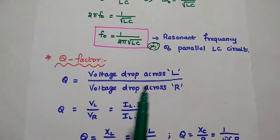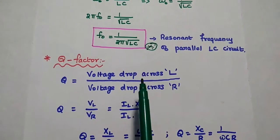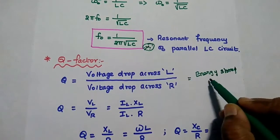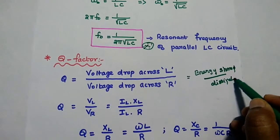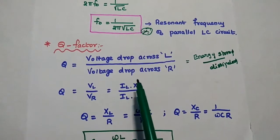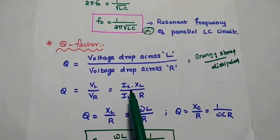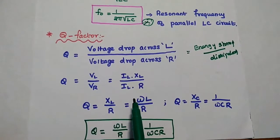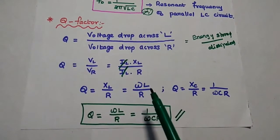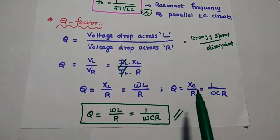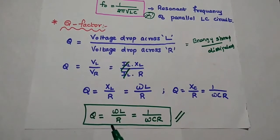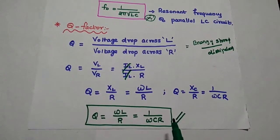Next, we find the quality factor. It is the ratio of voltage drop across the inductance to the voltage drop across the resistance — equivalently, the energy stored in the inductor to the energy dissipated in the resistance. Using the formula VL by VR: VL is the current through the inductor times XL, and VR is the current times R, giving XL by R. Since inductive reactance equals omega·L, the quality factor equals omega·L by R. In terms of capacitance, it equals XC by R, which is 1 by omega·C·R. So Q equals omega·L by R, which also equals 1 by omega·C·R.